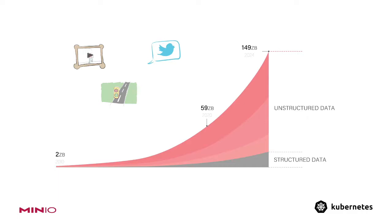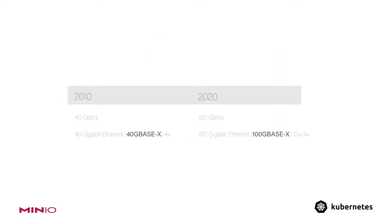Before going into the properties of unstructured data, let's take a moment to look at a parallel trend that accompanied this data growth: the evolution of hardware and software in these 10 years. In the last 10 years, the highest-end commercial network switches went from 40 gigabits per second to 100 gigabits per second — commercially available switches, not just the maximum possible at that time. Networking speeds have gone up two and a half times in just 10 years.